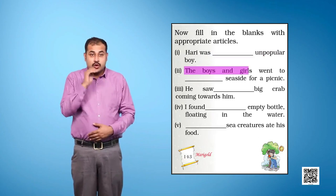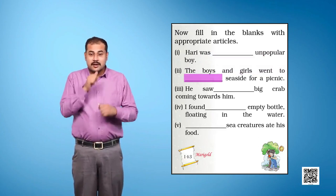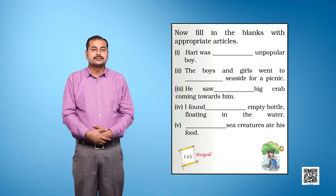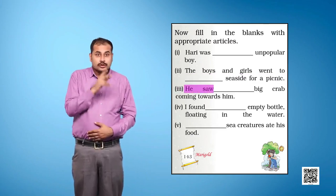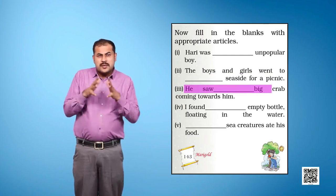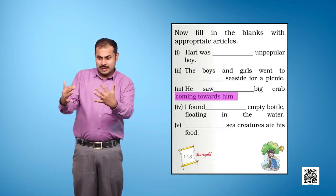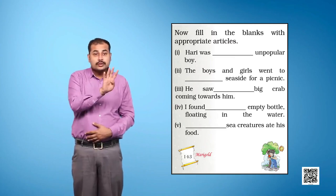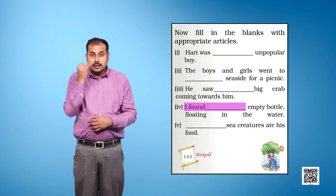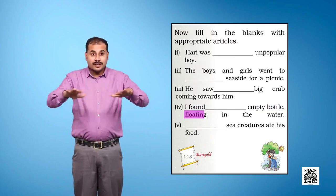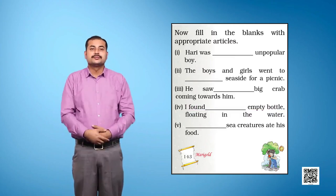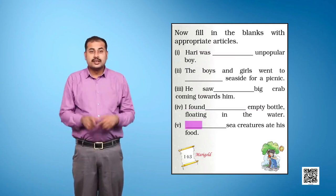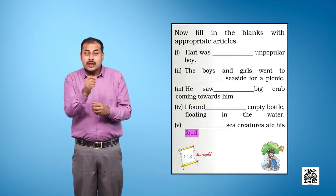The boys and girls went to, blank, seaside for a picnic. Blank, big crab coming towards him. Four. I found, blank, empty bottle floating in the water. Five. Blank, sea creatures ate his food.